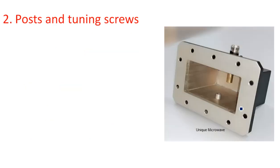Now coming to posts and tuning screws. A post is an iron rod inserted inside the waveguide from one end, so that power can be absorbed by that iron rod. If we are using a pure conductor — and waveguides are made up of pure conductors — a pure conductor reflects the electric field falling on it. If we use any impure conductor material, then power can be absorbed by that device.